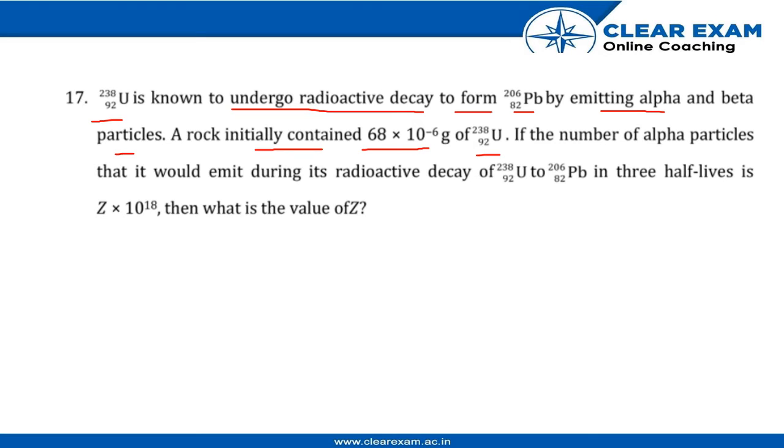If the number of alpha particles that would emit during radioactive decay of Uranium-92-238 to lead-82-206 in 3 half-lives is Z × 10¹⁸, then what is the value of Z?